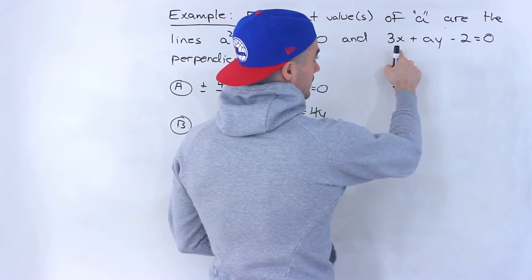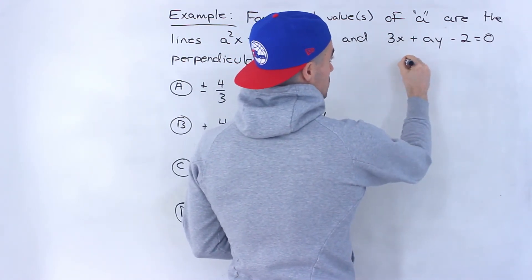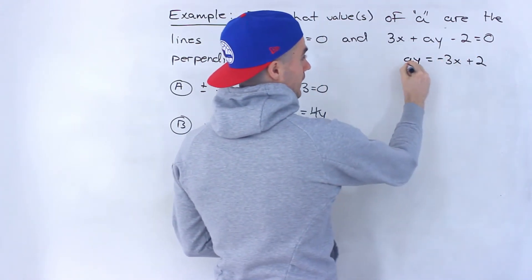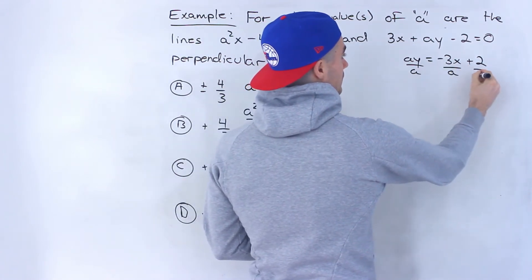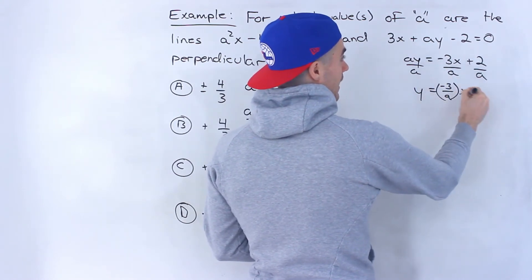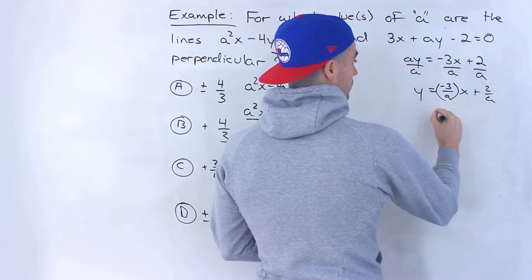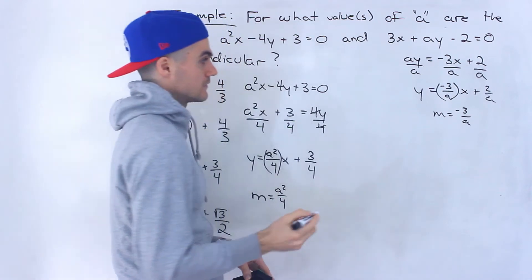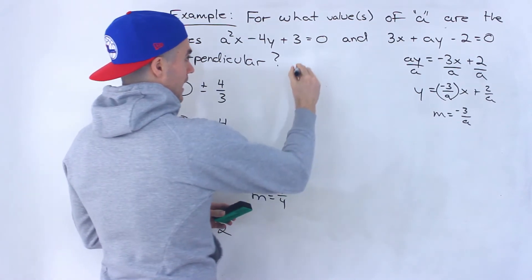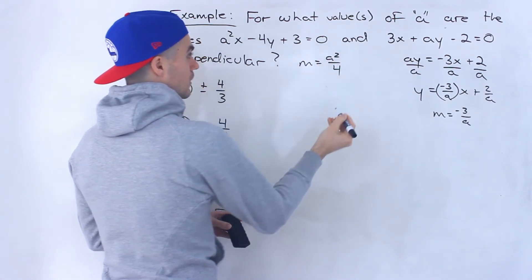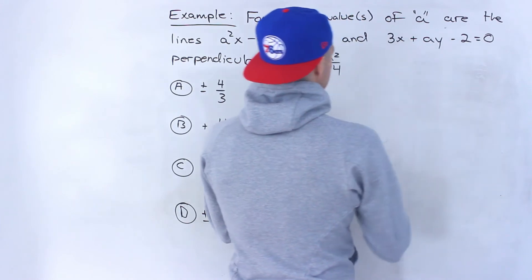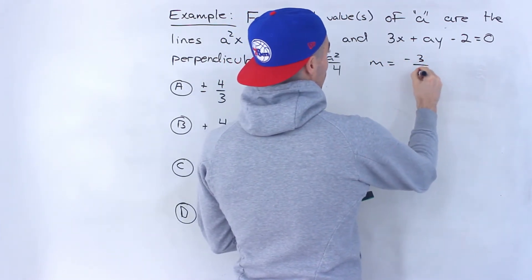Same thing with the second line — isolate for Y. Bring everything over: AY equals negative 3X plus 2. Then divide everything by A to get Y by itself. So Y equals negative 3 over A times X plus 2 over A. The slope of this line is negative 3 over A.